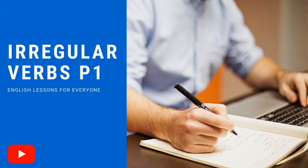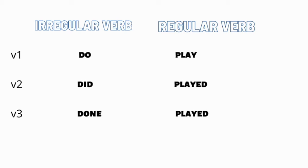So what are irregular verbs? These are the verbs where the past form and the past participle are different to their base form. For example, the verb 'to do' — the past form is 'did' and the past participle is 'done.' A regular verb is just the same for the past and the past participle; we just add an -ed at the end. For example, the verb 'to play' — the past form is 'played' and the past participle is 'played.' We just added an -ed at the end.